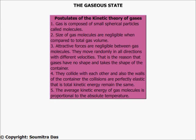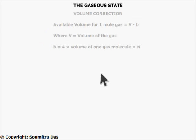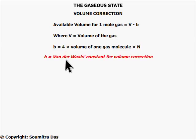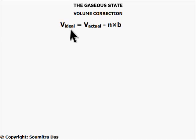The assumption made in the kinetic theory — that the volume of the gas molecule is negligible compared to the total gas volume — does not hold good at high pressures. The available volume for one mole of gas molecules is less by an amount B, which is equal to almost four times the volume of one mole of gas molecules, and is called the van der Waals constant for volume correction. Therefore, the ideal volume equals the actual volume minus n times B, where n is the number of moles.